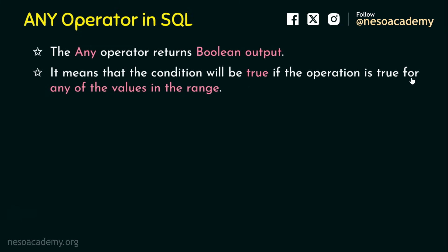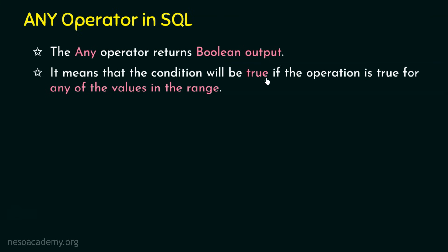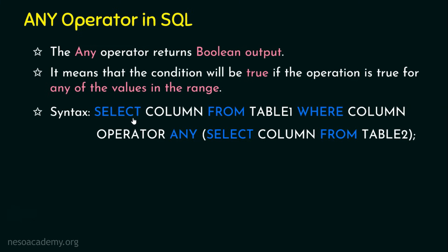It means that the condition will be true if the operation is true for any of the values in the range. The ANY operator expression has a condition, and that condition will be true if the operation is true for any of the values in the range. I'll explain this with an example — for now just understand that key concept.